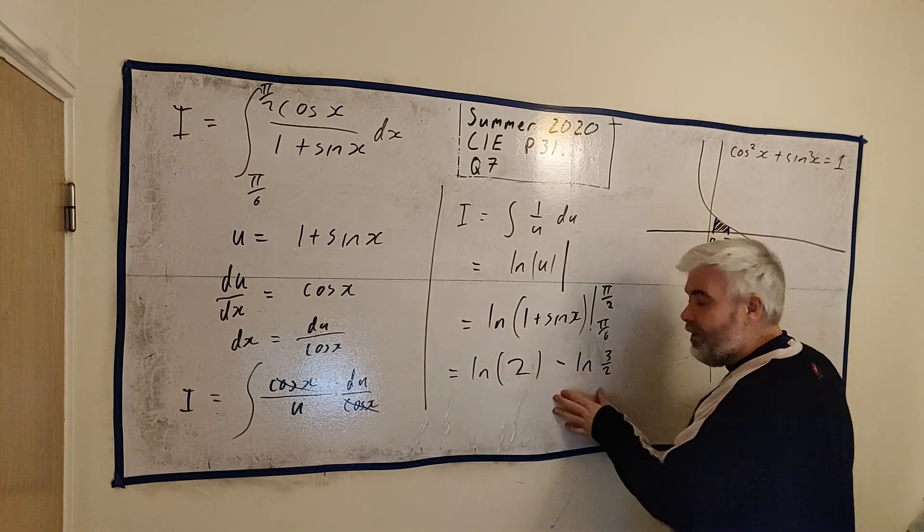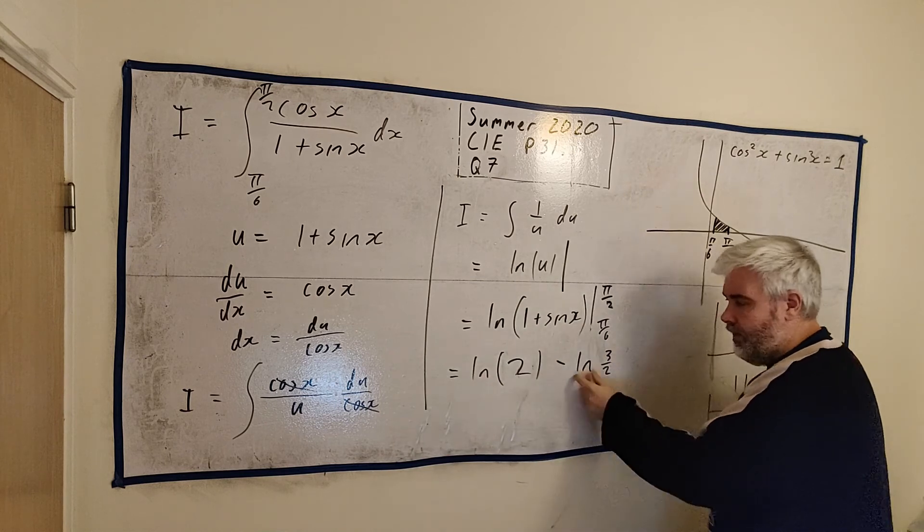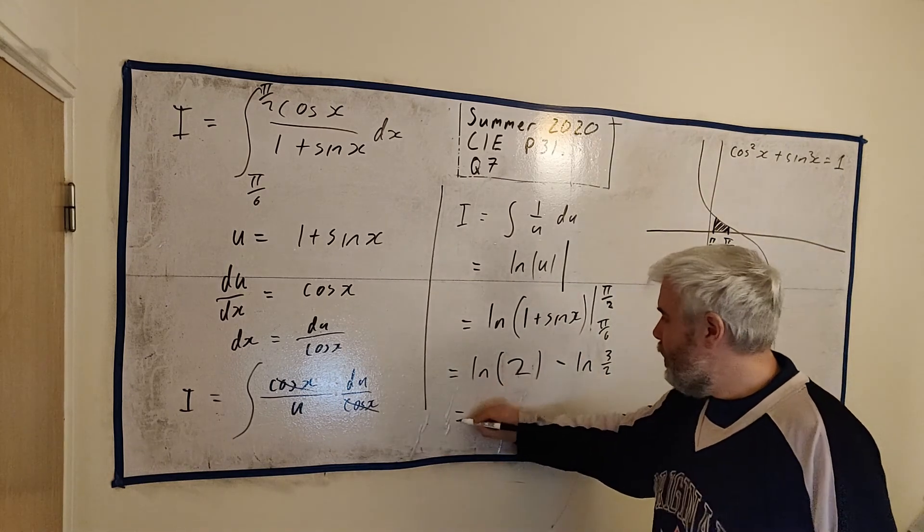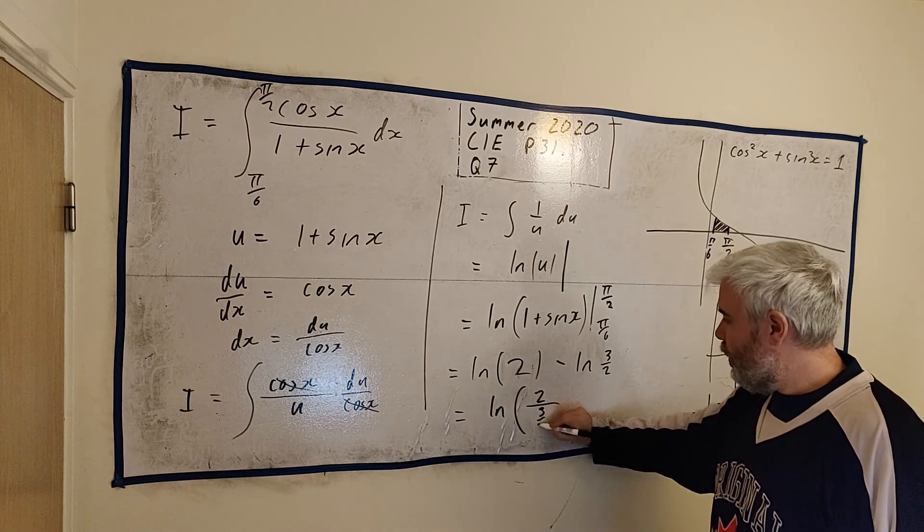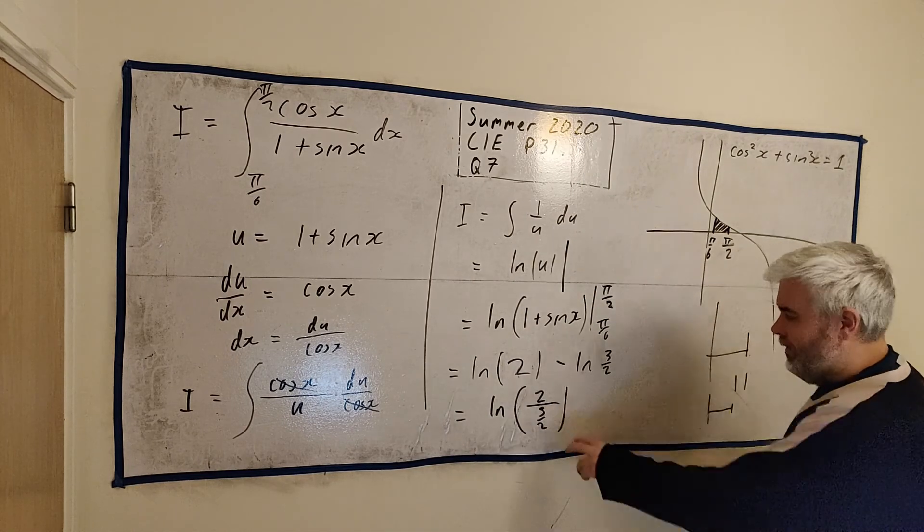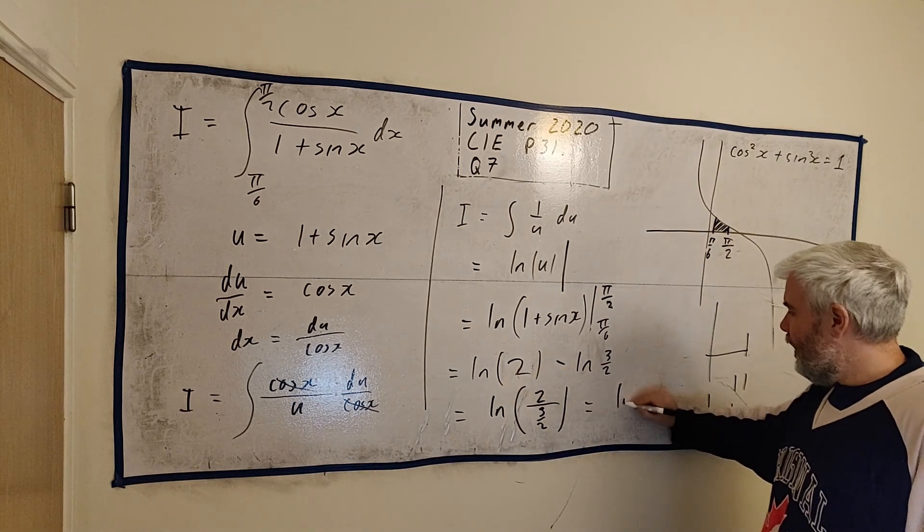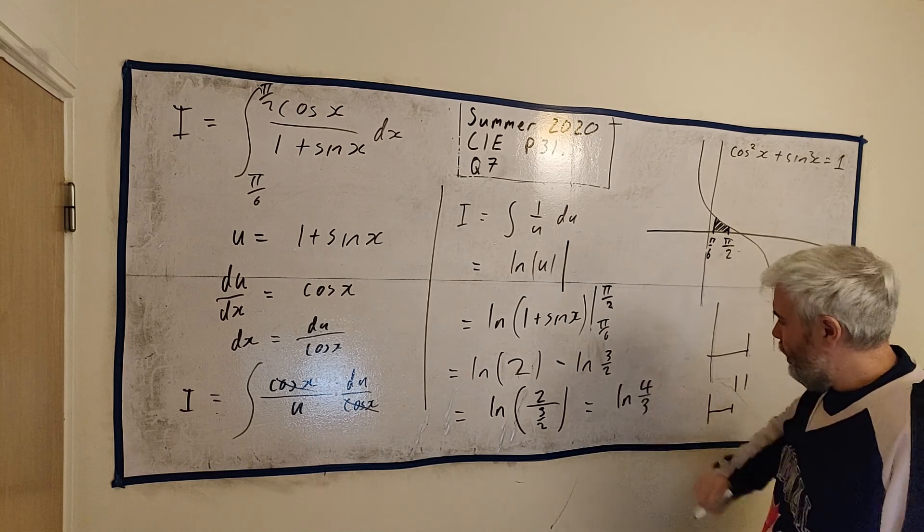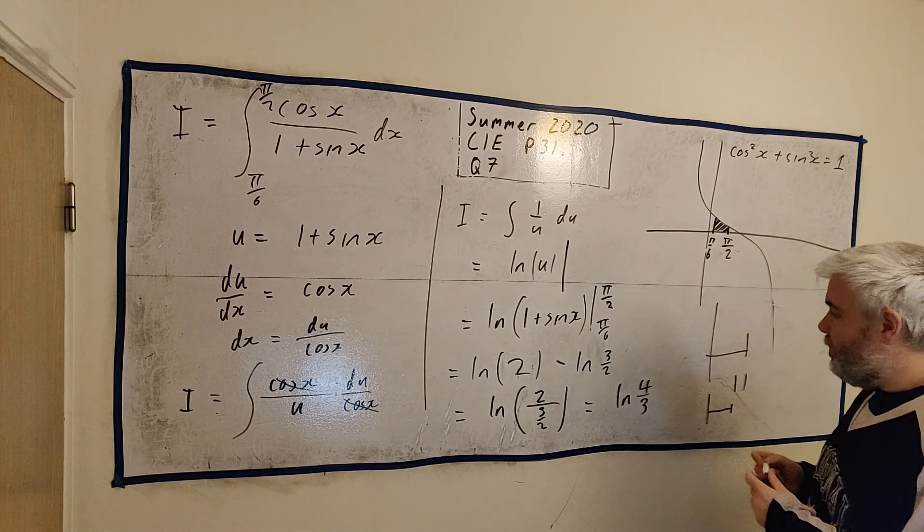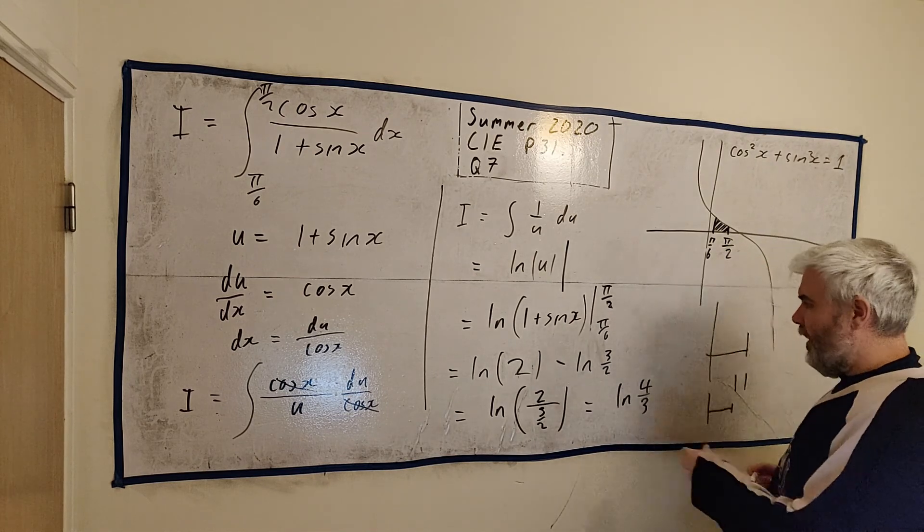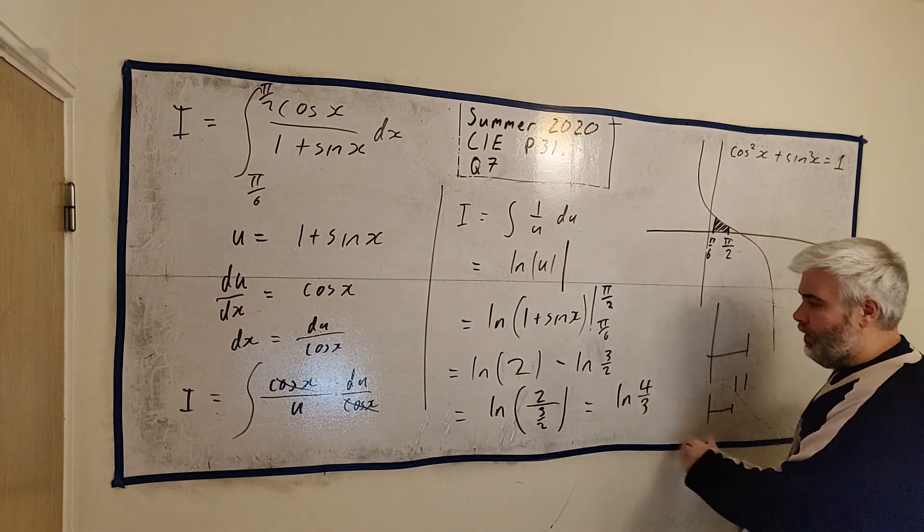Logs. When we take away two logs that have the same base, log to the base e, we can also write it like this: natural log of 2 divided by 3 over 2. And how do we divide a fraction? Turn it upside down, multiply. We get natural log of 4 over 3. And that's the full answer. The question asked for the exact answer simplified. So I guess this is exactly correct. This is the simplest we can get it.